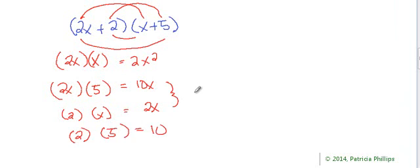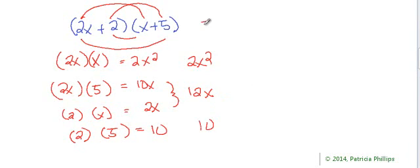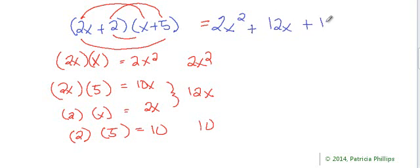The 10x and the 2x combine to give us 12x. So we have 2x squared, 12x, and 10. Can we simplify any further? No, we cannot. So the answer here is simply 2x squared plus 12x plus 10.